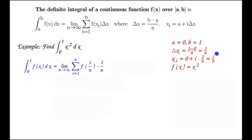In for X_i, we put i over n. In for delta X, we put 1 over n. Now we can put in the function. The function is X squared, so F of i over n is i over n squared.